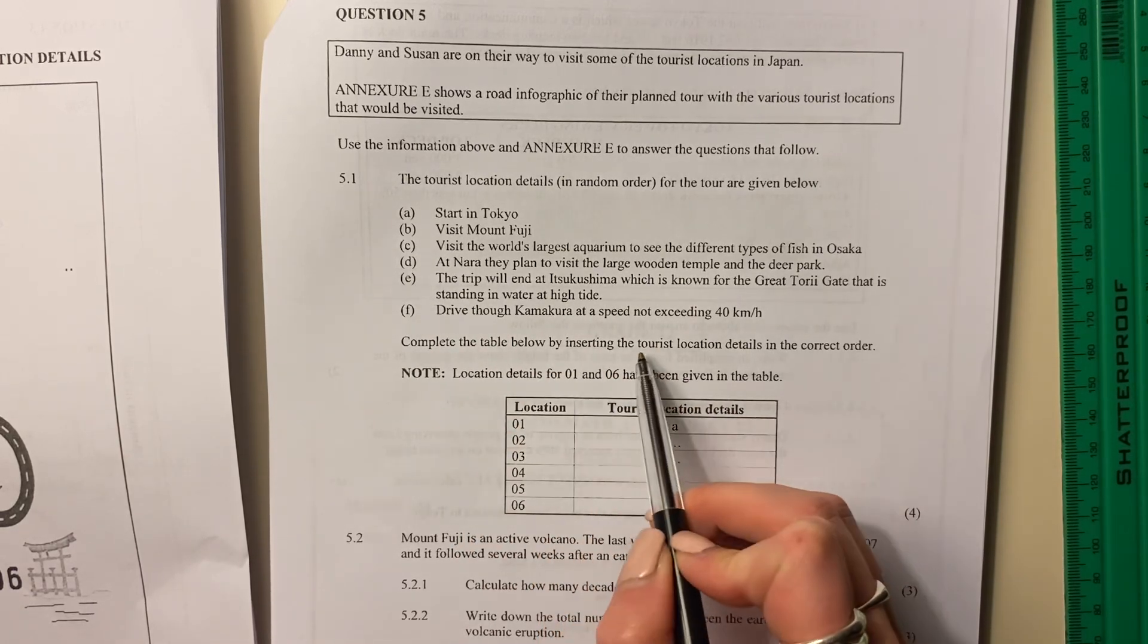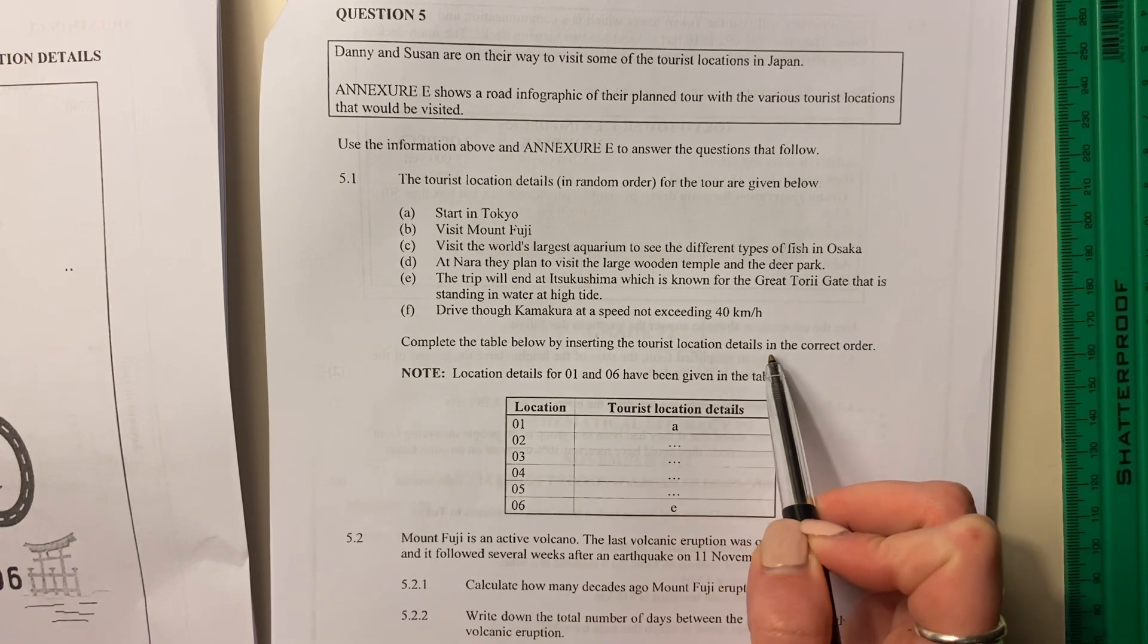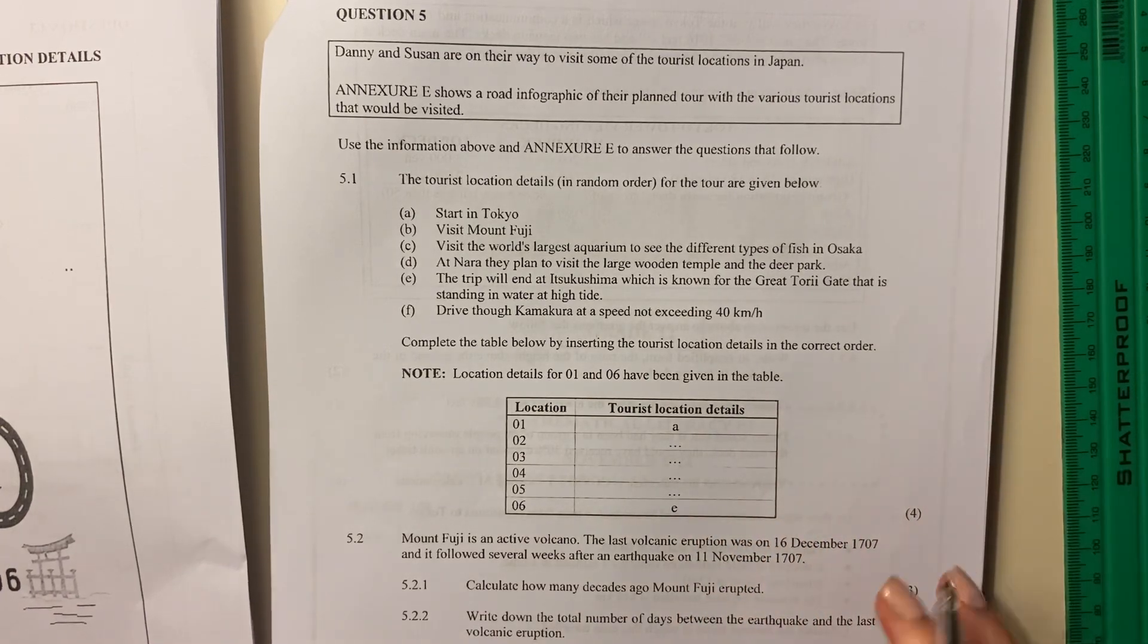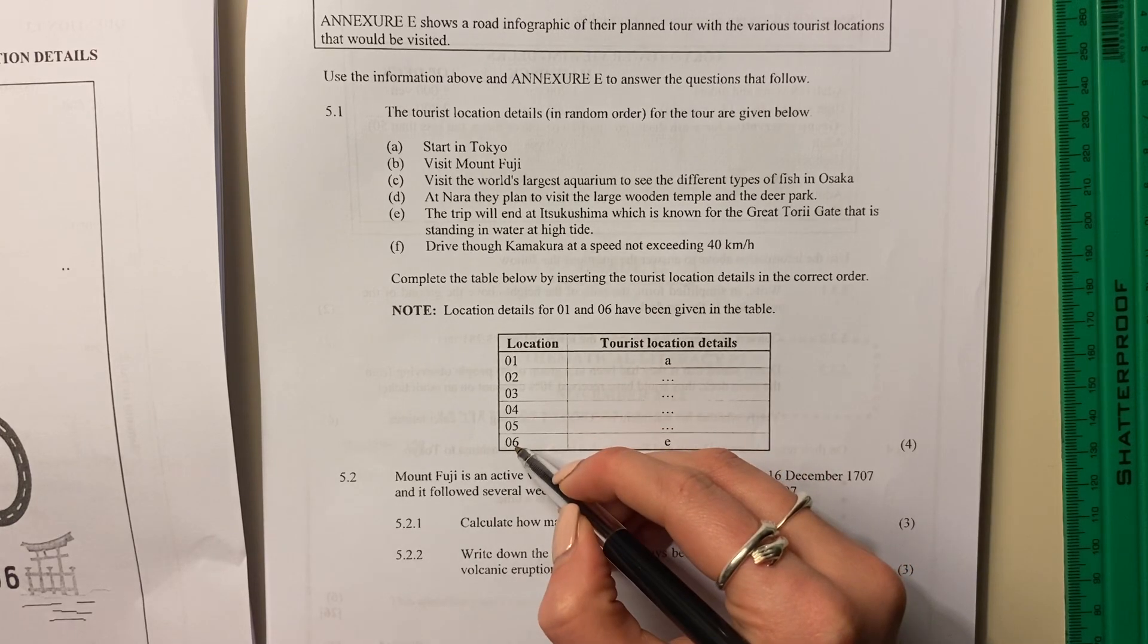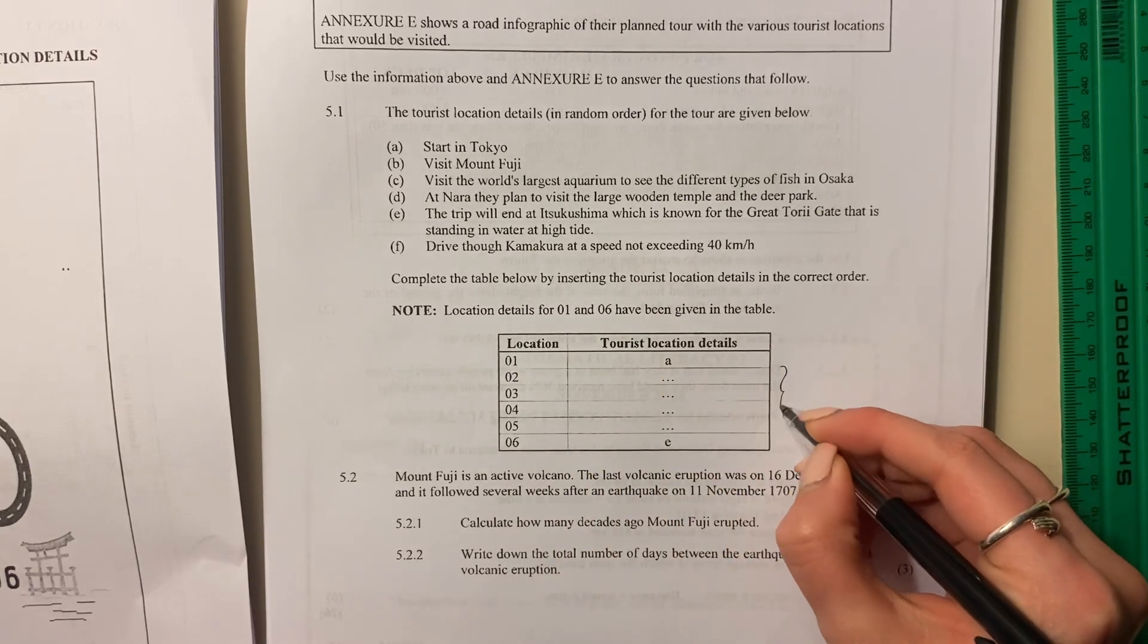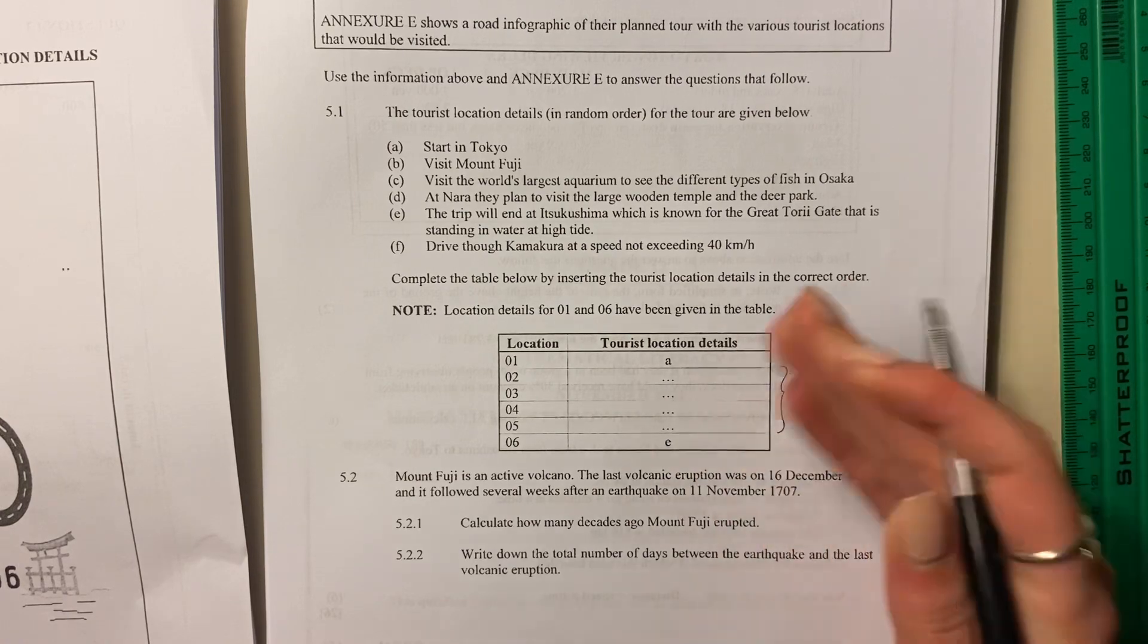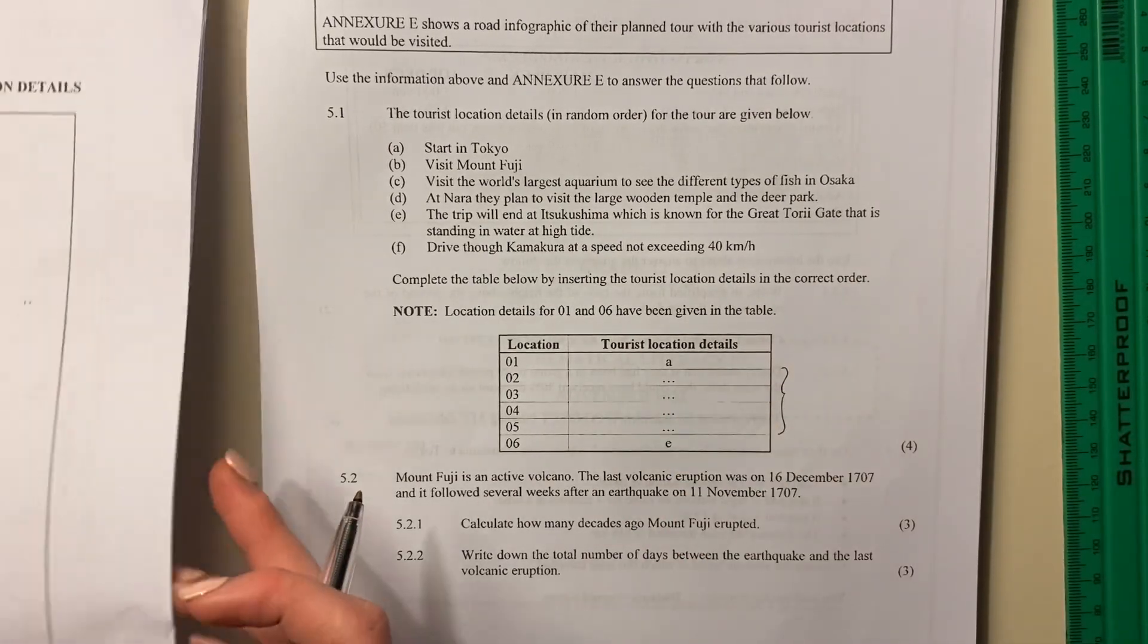Complete the table below by inserting the tourist location details in the correct order. Okay, so they've done the first and the sixth one for us, but we have to do the ones in between. I'm just going to write them in here. Obviously, you need to write them in your answer book, but let's do this together.